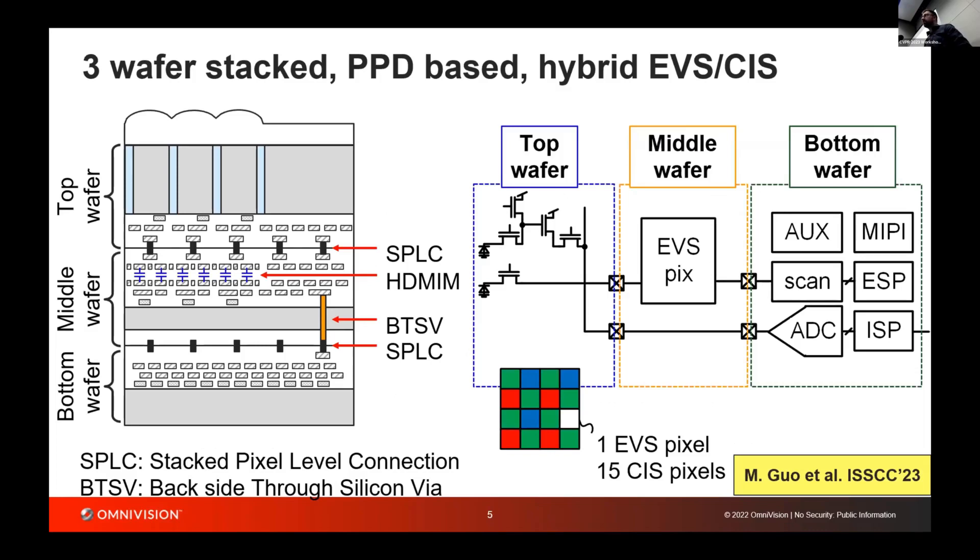This is a cross-section of our three wafer stacking process. You can see on the left-hand side that image. The top wafer is really for the pixel devices. There are micro lenses and color filters and deep trench isolation. The top wafer connects to the middle wafer using stacked pixel-level connections. On the middle wafer, we have basically all the EVS pixel readout circuitry connecting to the bottom wafer using backside TSVs, where we have all the peripheral circuits.